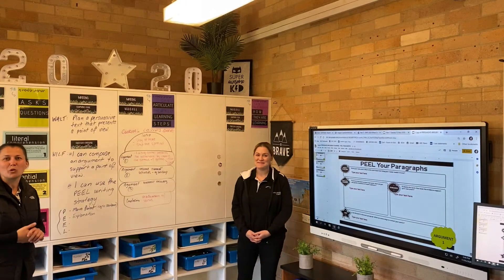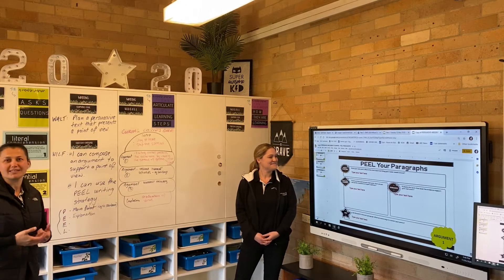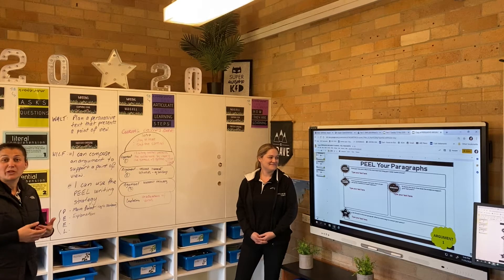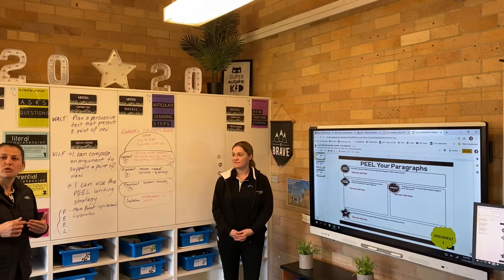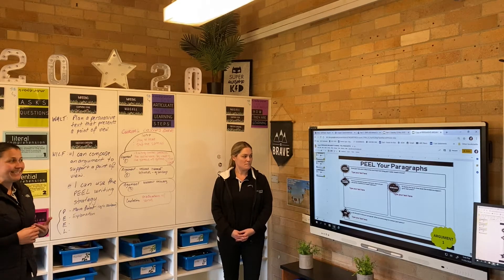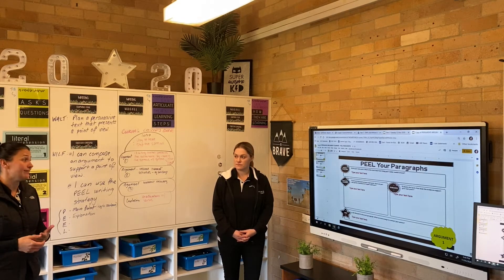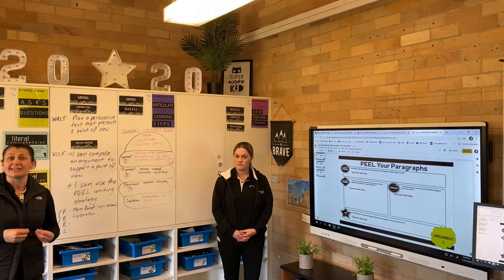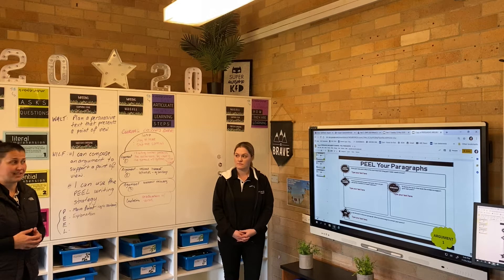So just to recap what PEEL actually is. Our P stands for point or purpose. That's where you state your main point, and you want to make sure you know exactly what the most important thing is that you want your reader to know. Then E stands for evidence and explanation, where you find facts that make up your main point and use quotes, statistics, and expert opinions to back that point up.